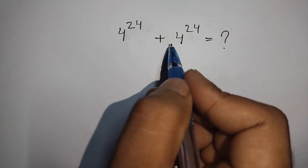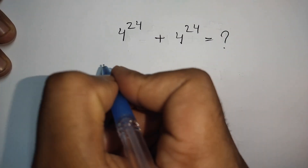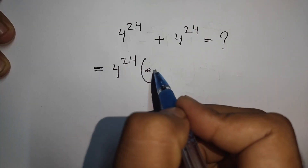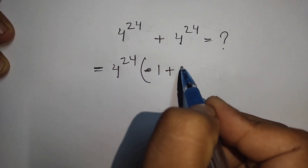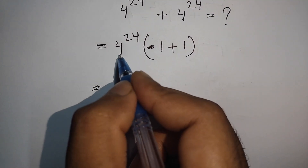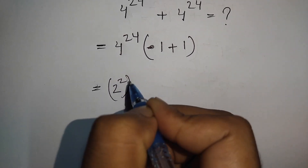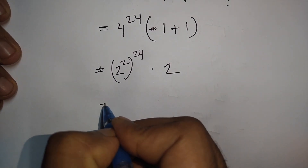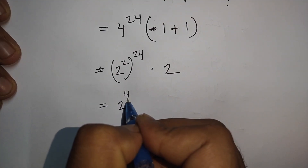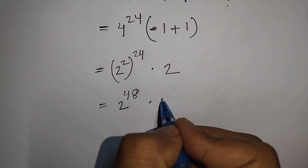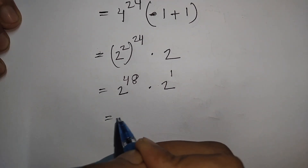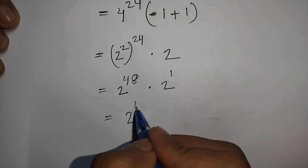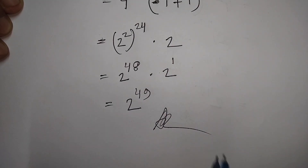Bonus problem: 4^24 plus 4^24 equals what? First, take 4^24 as common factor: 4^24 times (1 + 1) equals 4^24 times 2. Now 4^24 is the same as 2^2 whole power 24, which equals 2^48. So 2^48 times 2 equals 2^(48+1) equals 2^49. So 2^49 is the correct answer.